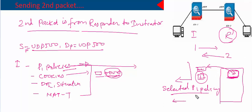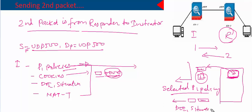In the second packet sent from the responder, it sends the selected phase one policy and then sends the cookies back. The initiator cookie still remains the same, and the responder calculates its own cookie and puts that into the responder cookie field — so the responder cookie field will no longer be blank. It also sends the DOI (domain of interpretation), which is set to one, indicating this negotiation is for IPsec, sends the situation, and it sends the selected NAT-T parameters.